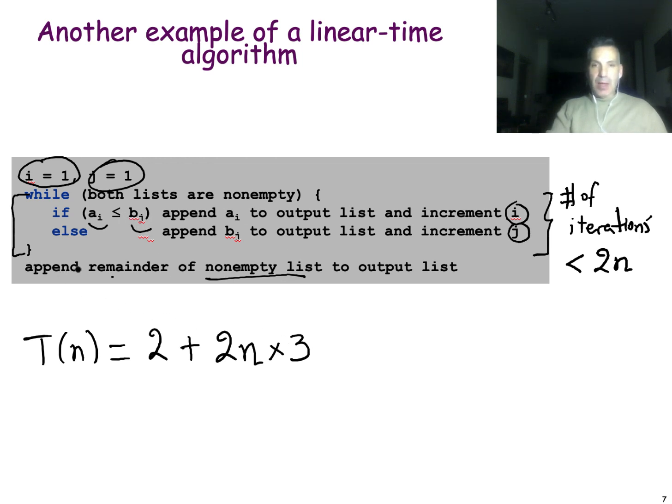And then, of course, the append statement, this last statement, again, in the worst case, we will have to move all n elements of one of the two lists. So this is n additional operations. Again, I want you to understand that this is an upper bound. So instead of writing an equality here, I will change it into an inequality. The running time will be at most this much. We can, of course, simplify this if you like. This is a linear function of n again. So this is why we refer to this algorithm as a linear time algorithm as well.